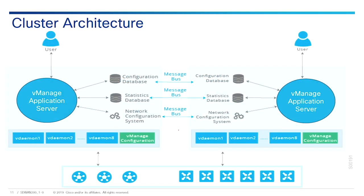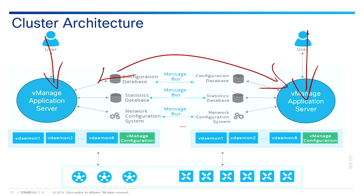In a cluster setting, administrators connect to the GUI on the application server of any of the vManage devices. A permanent automatic synchronization occurs between all devices through the message bus. So if a user logs into one device and another user logs into a different one and they both make changes, those changes happen automatically between the two and are synchronized. This is like a publisher-subscriber environment, but here we are equal peers — changes automatically get propagated.